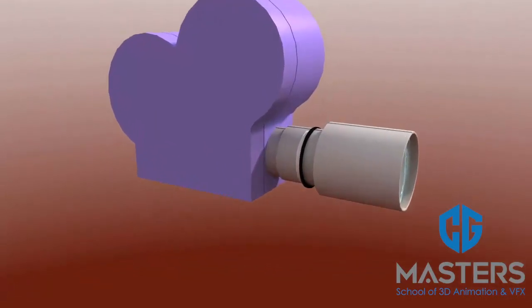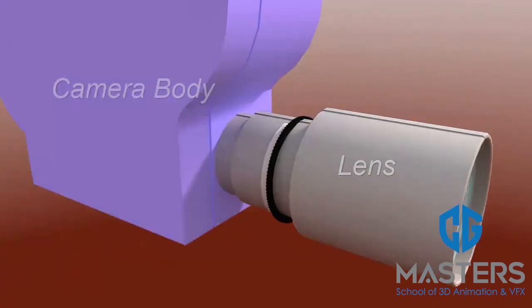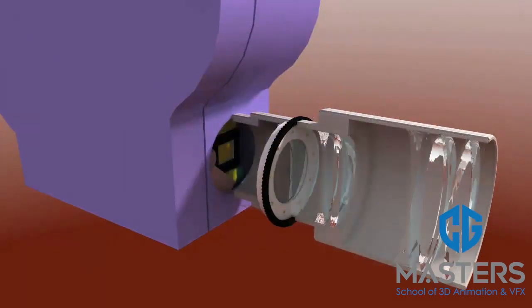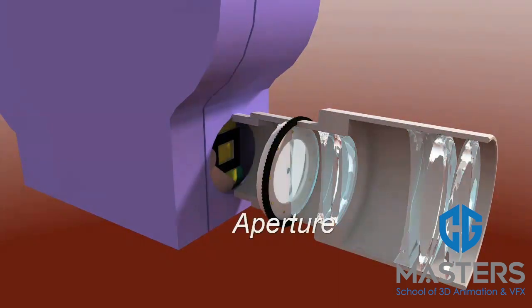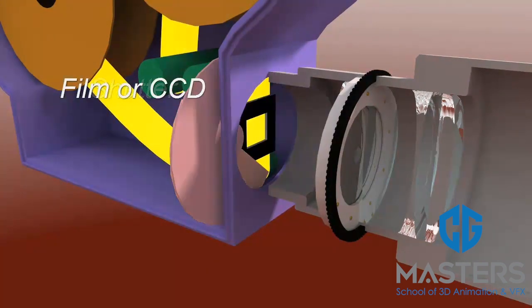A motion picture camera is composed of two primary elements, the lens and the camera body. The lens contains all the optical elements and the aperture, while the camera body contains the gate, the shutter, and the recording medium.